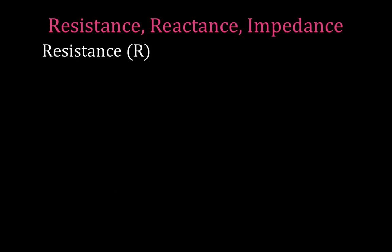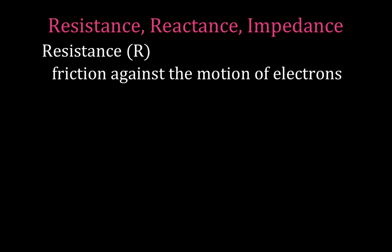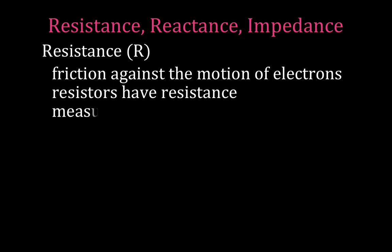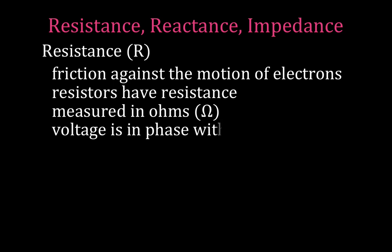Resistance. What is resistance? It's hard to come up with a good definition of resistance that doesn't have the word resistance in it — like resistors resist the flow of charge — but we can say that resistance is the friction against the motion of electrons. It's actually the electrons running into the material in the conductor, or whatever the charge happens to be traveling through. Resistors have resistance, it's measured in ohms, and the voltage is in phase with the current.